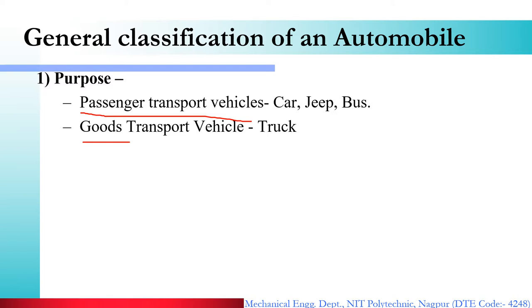If you are talking about passenger transport vehicles, those include cars, jeeps, and buses — these all are passenger transport vehicles. When talking about goods transport vehicles, those include trucks, mini trucks, and matadors. These vehicles come under the goods transport category.